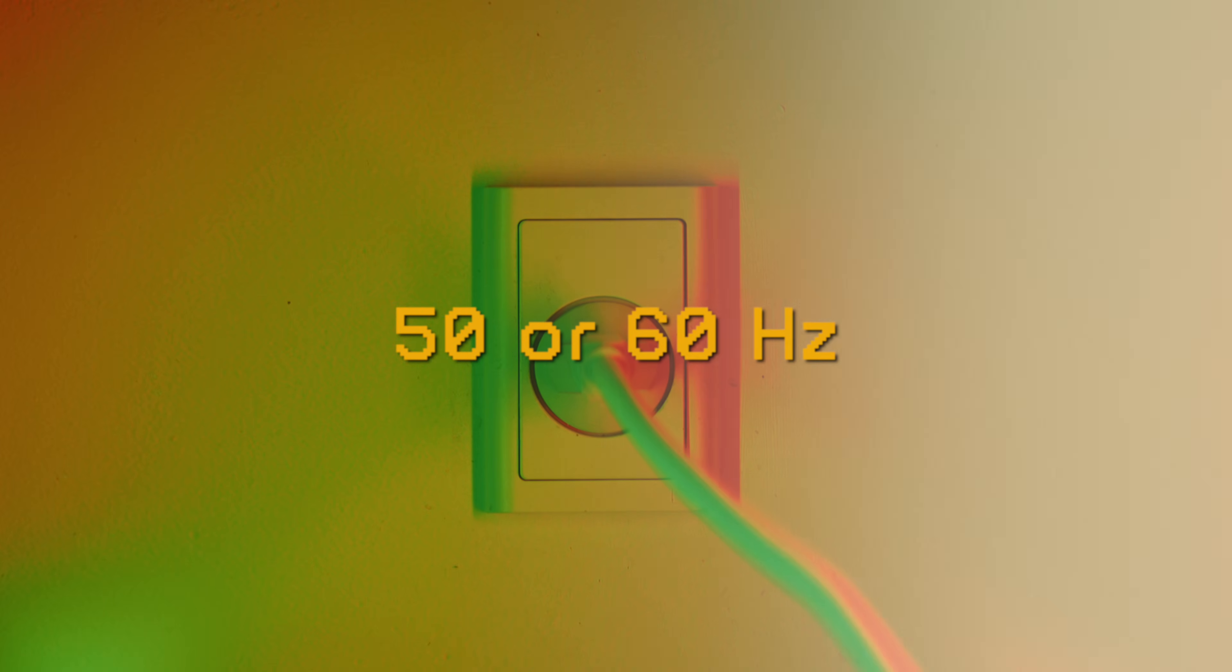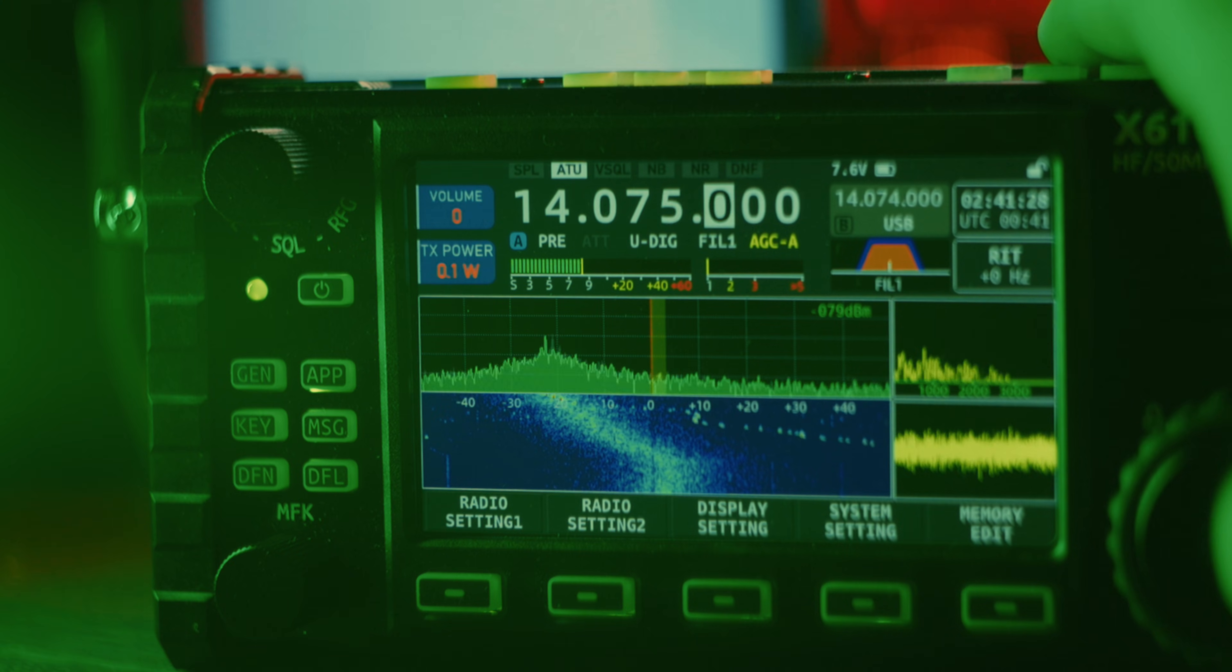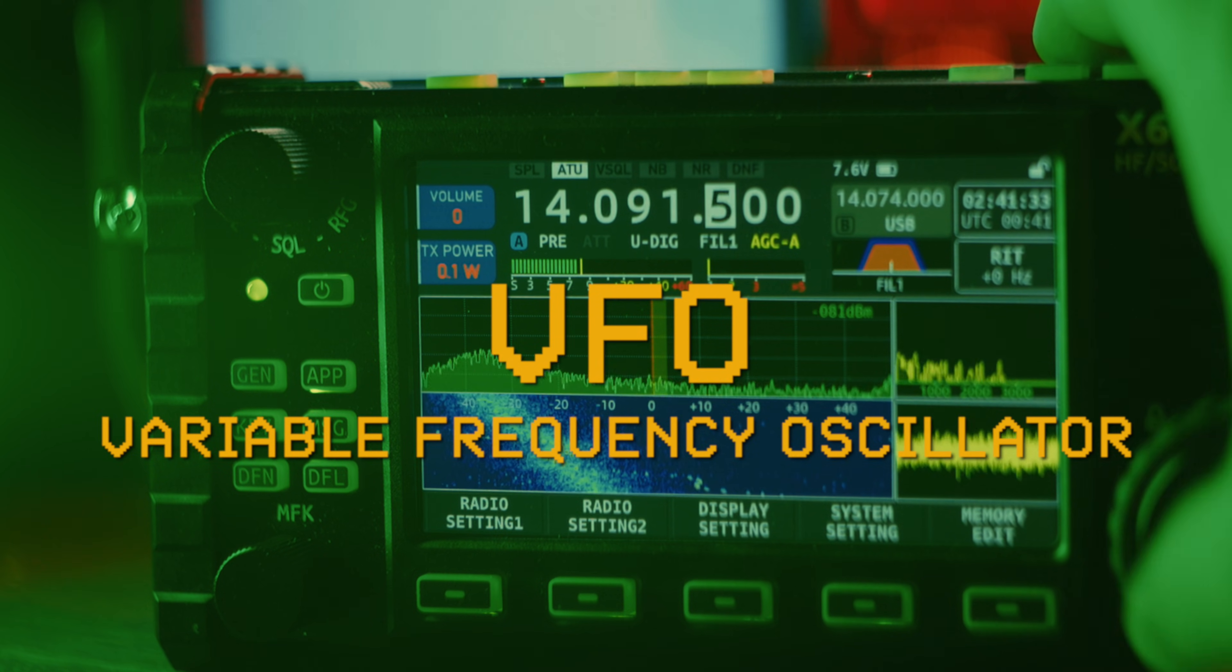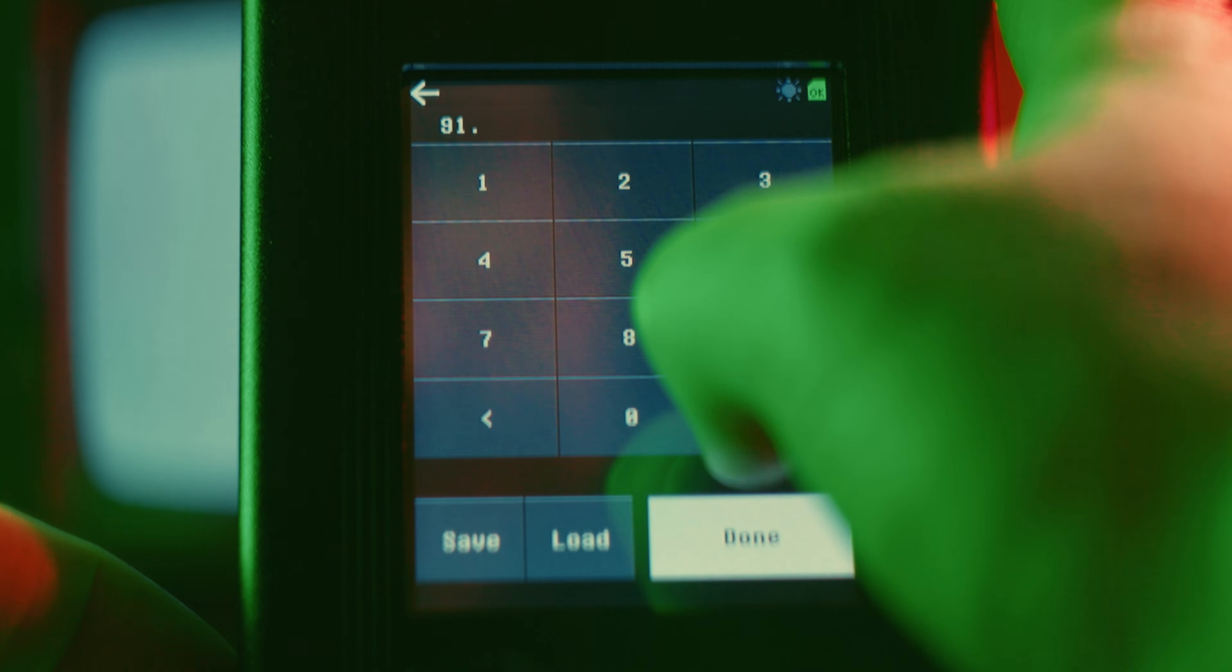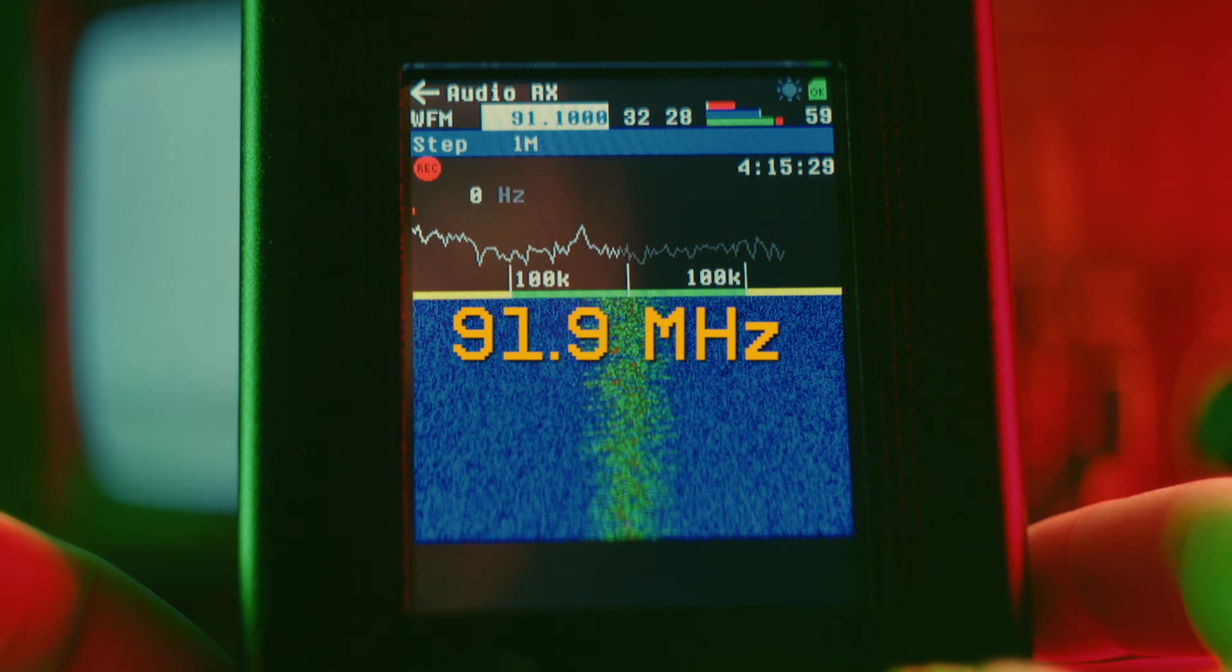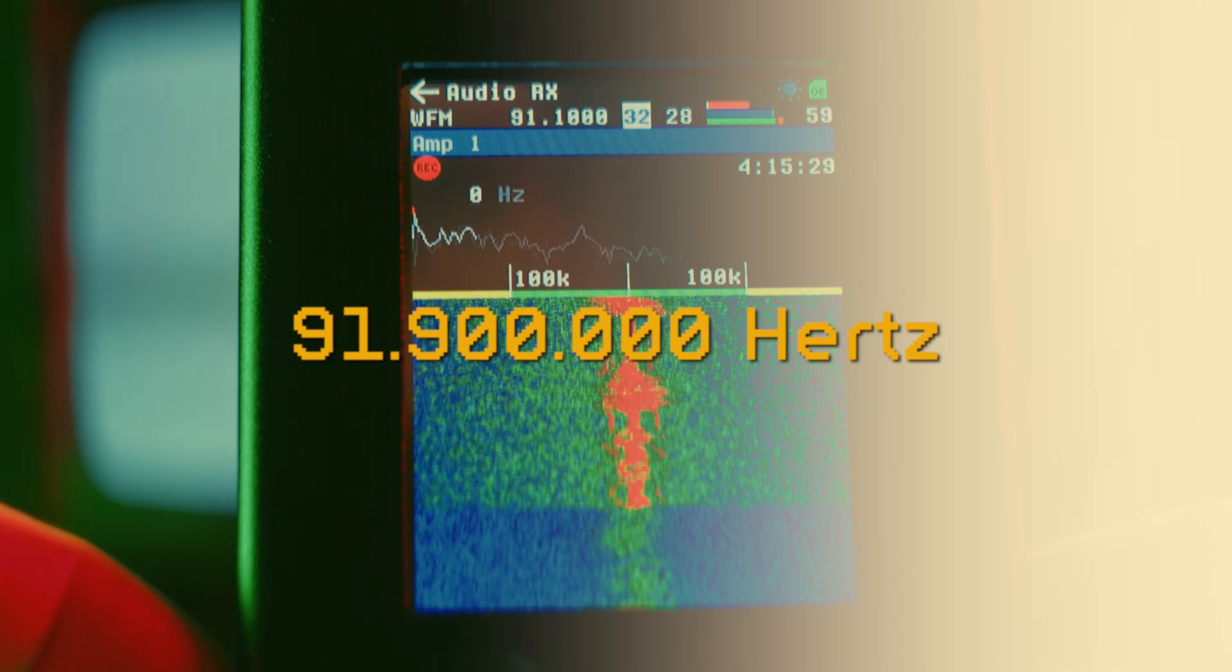Hertz is a measurement that means times per second. A radio is also an oscillator. VFO is an abbreviation for variable frequency oscillator. This just means that you can change the frequency. The frequency of a local FM broadcast station might be at something like 91.9 megahertz, that's 91.9 million oscillations per second.